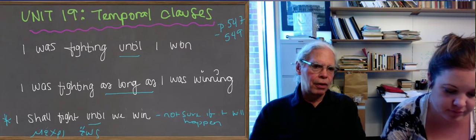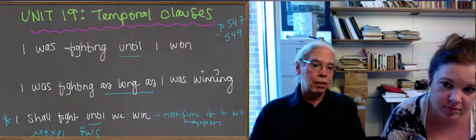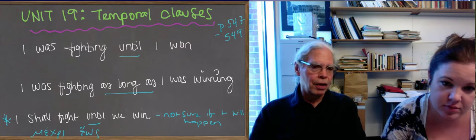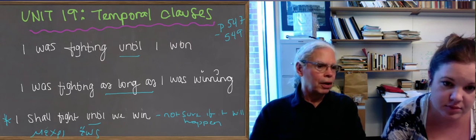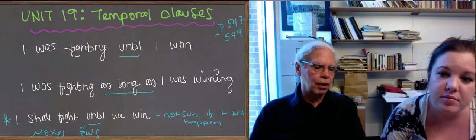If you were, as long as I was winning, then you use mecri, which you also use for as long as, with the imperfect, right? It's about a process going on, right? And real.